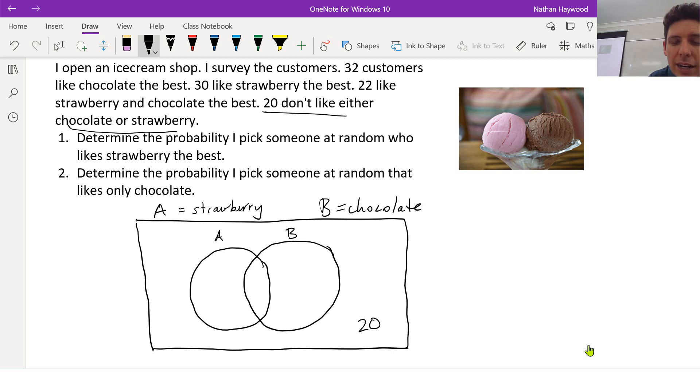Alright, next. It says 32 like chocolate the best. It says 30 like strawberry. And then it says 22 like strawberry and chocolate. So how can we figure out those that only like strawberry, not chocolate? So we do the 30 strawberries minus the 22 that like strawberry and chocolate. So that's going to leave us with 8.